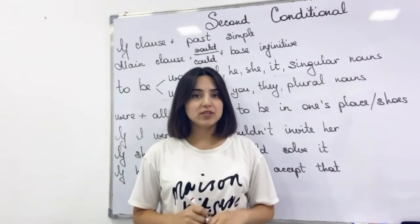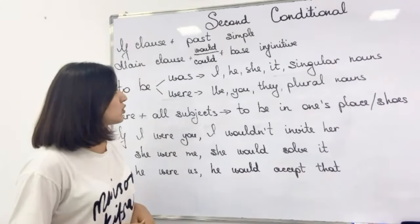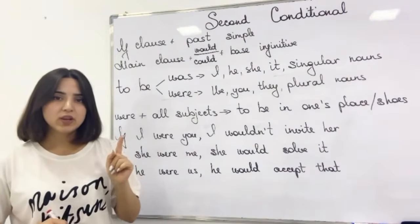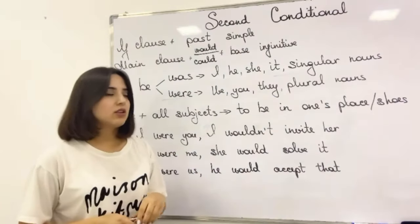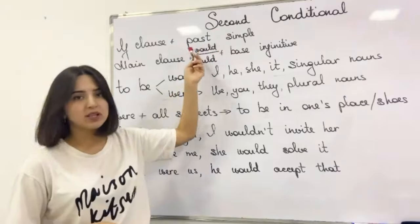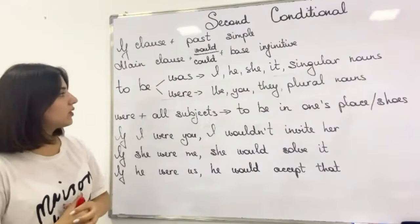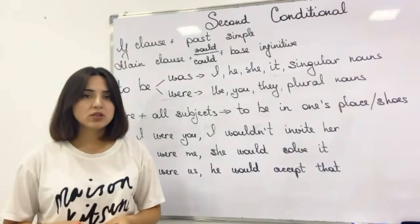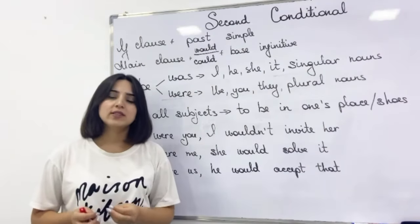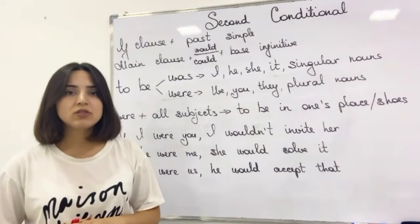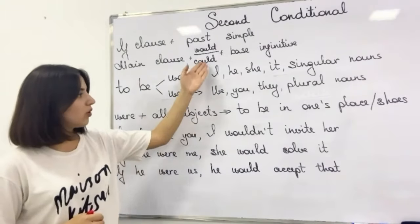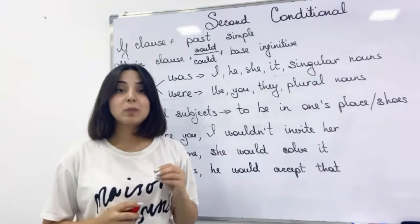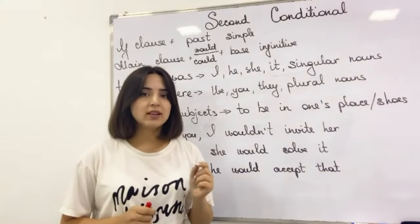There is one interesting point about second conditional I want to speak about. We use the if clause with past simple and the main clause with would or could plus base infinitive. But there is one case: if I want to use 'to be' in the if clause of a second conditional, I need the past simple versions of 'to be'. We know that 'to be' has two forms in past simple: 'was' and 'were'. 'Was' is used with I, he, she and similar nouns, but 'were' is used with you, we, they and plural nouns. However, there is one situation where we use 'were' with all subjects — when we speak about being in someone's place or being in someone's shoes, which is an idiomatic phrase.